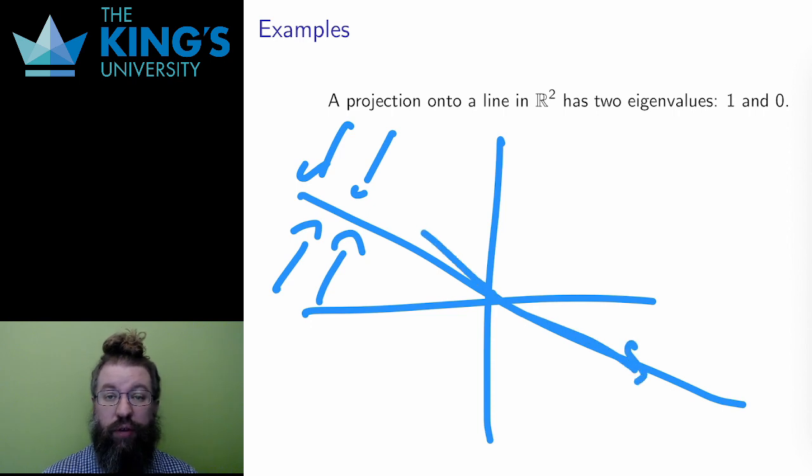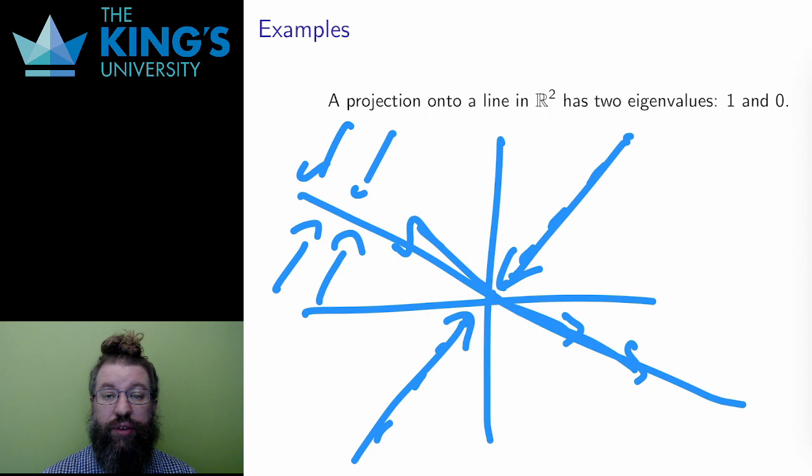so those vectors are eigenvectors with eigenvalue 1. The line directly perpendicular to the line of projection is the line that gets sent to 0. All vectors on this line end up at the origin. These are all eigenvectors with eigenvalue 0.